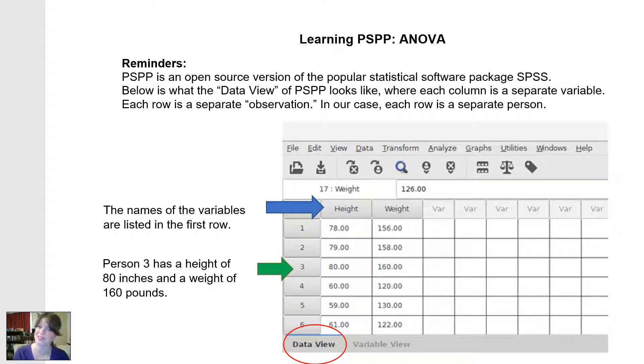Hi, I'm Dr. Jennifer Moses, Dr. Jenny, and today we're going to learn to use PSPP, the free version of SPSS, to do a one-way ANOVA.